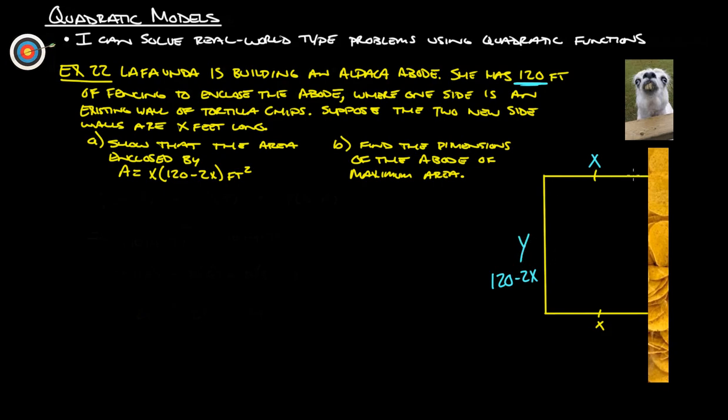Whatever you have left after these two sides is what's left for the Y, which is going to be 120 feet minus these two X's. So Y is really 120 minus the two X sides. The big key here is showing that Y is the same thing as 120 minus the two X's.